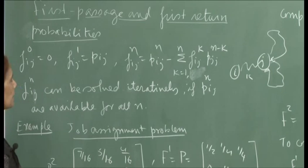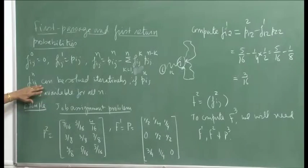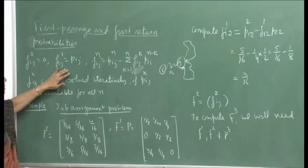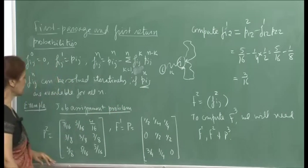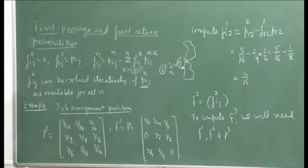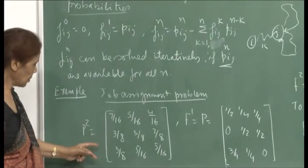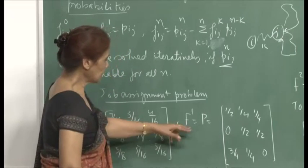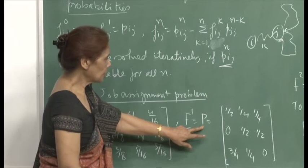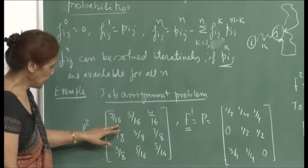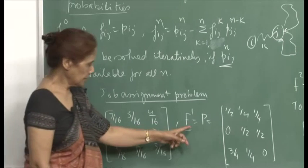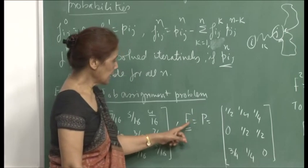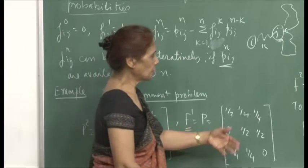I will revisit this and explain it better. We can solve these iteratively given the initial conditions, but we need p_ij(n) available for all n. Looking at the job assignment example, p-squared is given, and using the notation where p is the matrix of one-step transition probabilities, p-squared is the matrix of two-step transition probabilities.